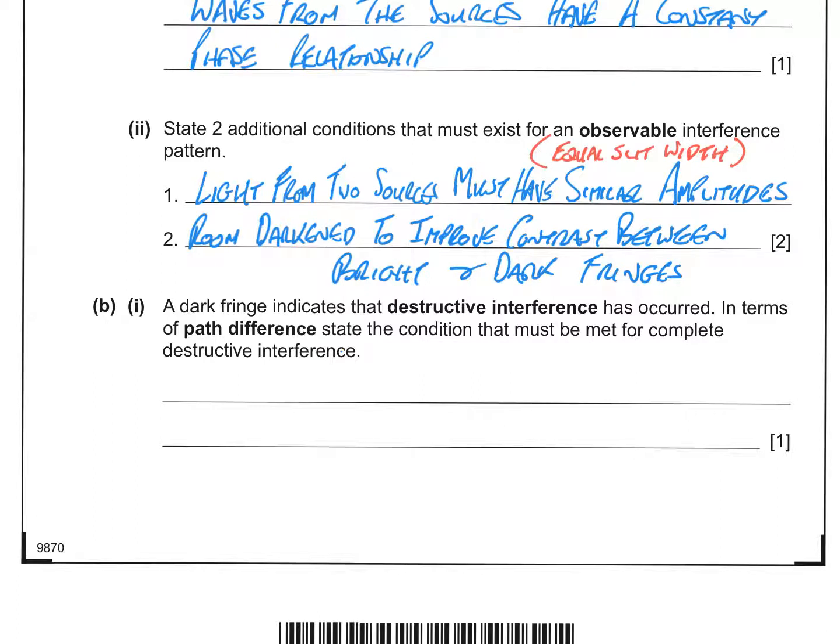Part B1: a dark fringe indicates that destructive interference has occurred. In terms of path difference, state a condition that must be met for complete destructive interference. Now remember what happens in destructive interference. You've got one wave arriving with its trough at the same time as another wave is arriving with its peak. And the idea is that this downward vector is being cancelled,